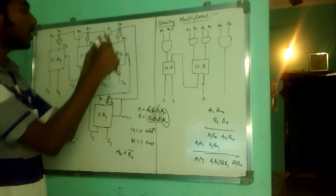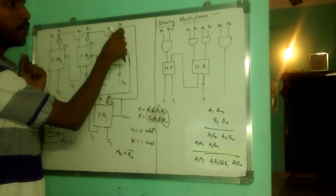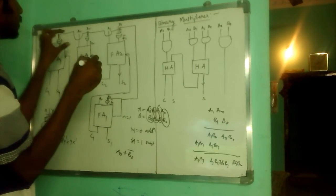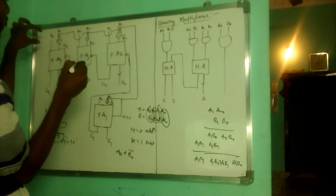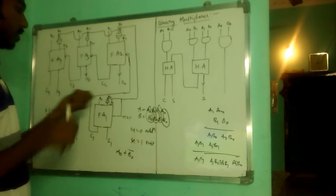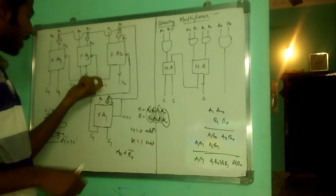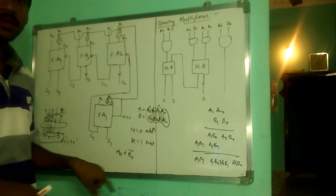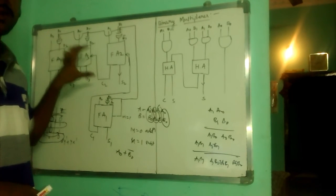So, here it performs subtraction. Again, M equals 1 is sent to here. So, B1 and M equals 1, it performs B1 complement. A1 and B1 complement are added. Similarly, A2 and B2 complement are added. A3 and B3 complement are added. So, it gives the sum carry, but actually it is performing the subtraction operation. This is how a full adder subtractor circuit works.